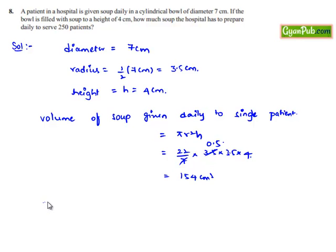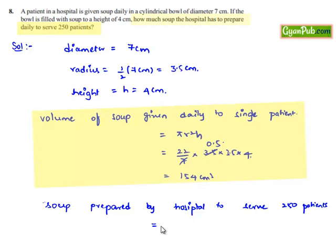Let us calculate the soup prepared by the hospital to serve 250 patients which is the product of 250 into volume of soup given daily to a single person, that is 154 cm³, which is equal to 38,500 cm³. We know that 1 liter is equal to 1000 cm³, so we can say that is 38.5 liters of soup.